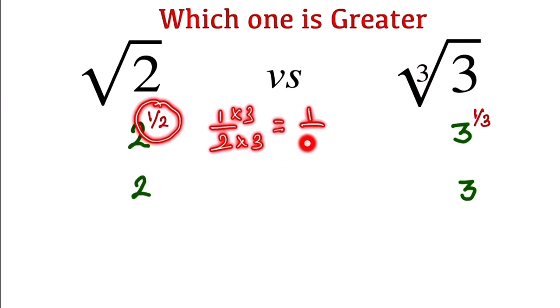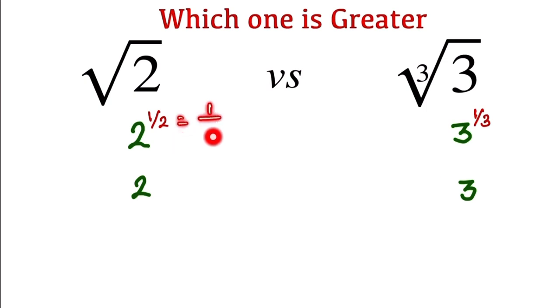So equal to 1/6 times 3. 1/2 is equal to 1/6 times 3, so we write here. And here 1/3 can be written as when we multiply by 2 on both numerator and denominator.